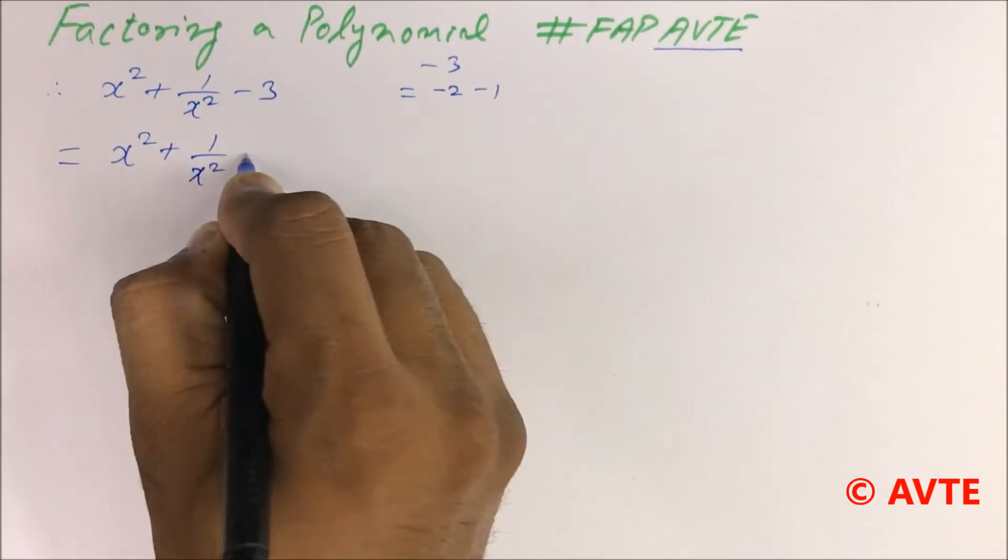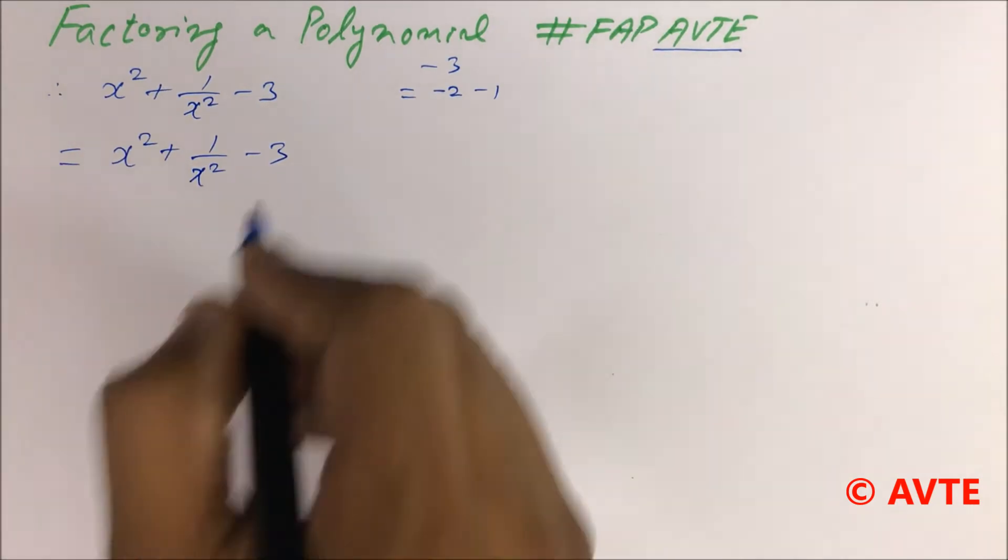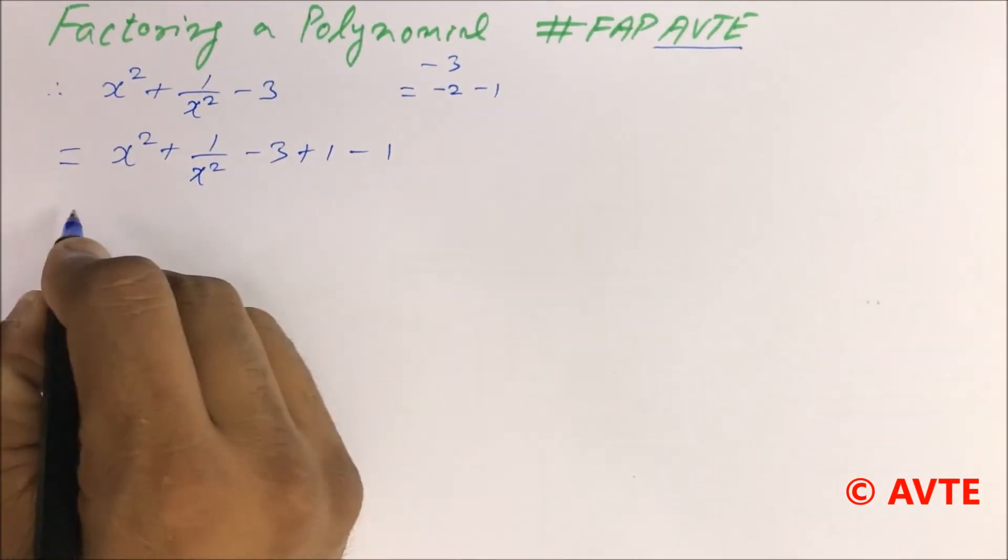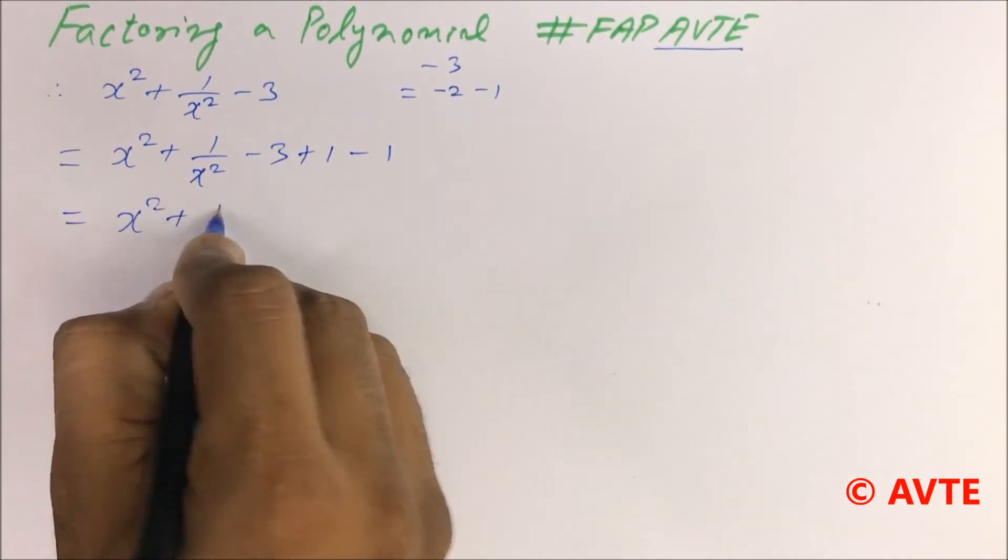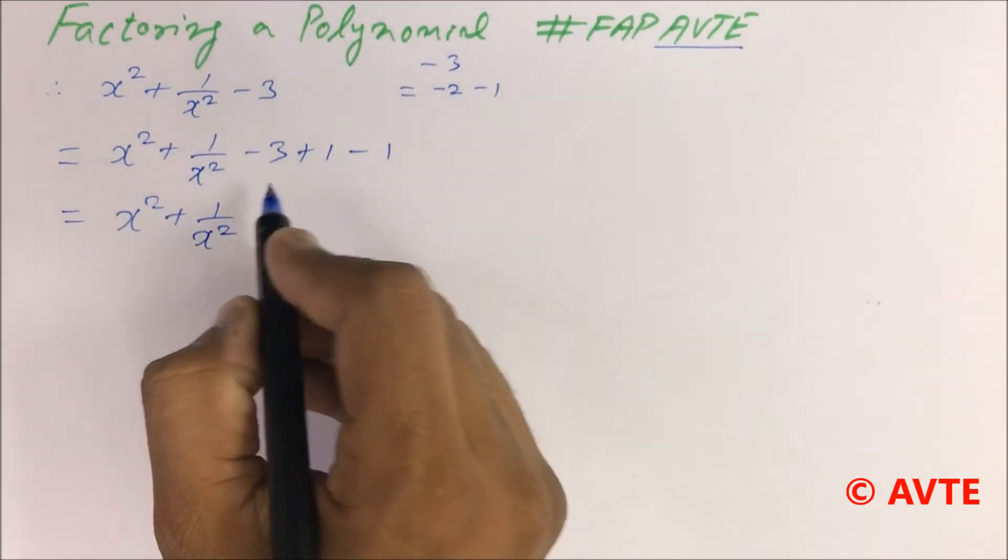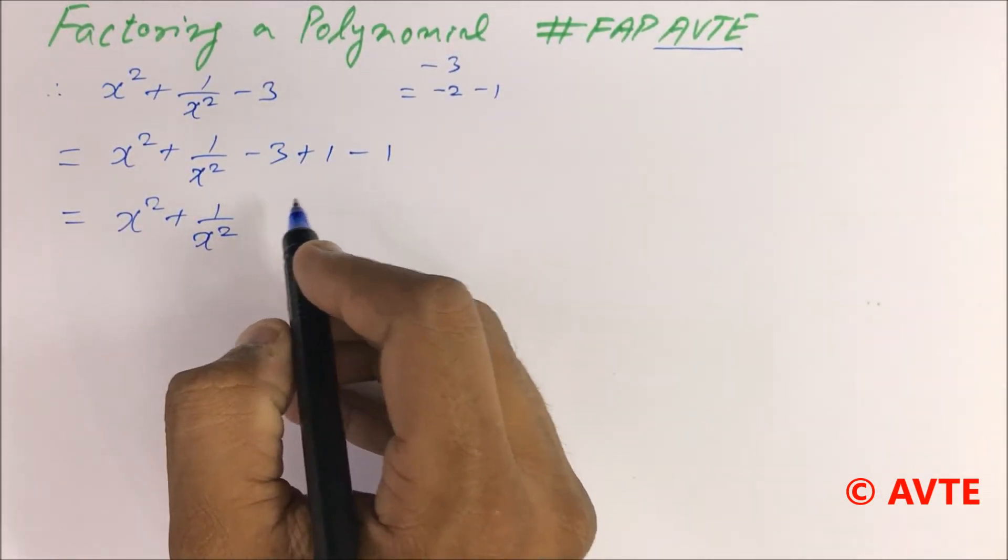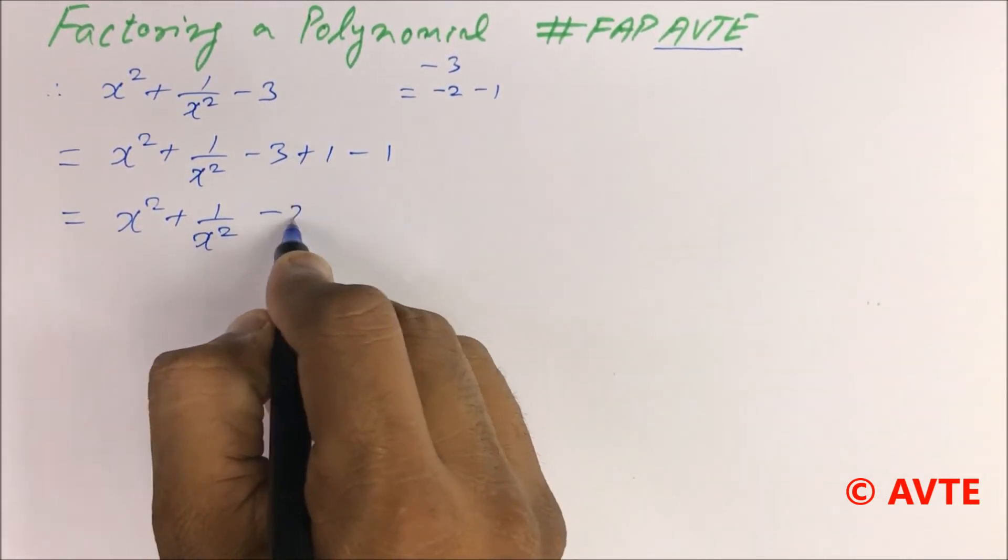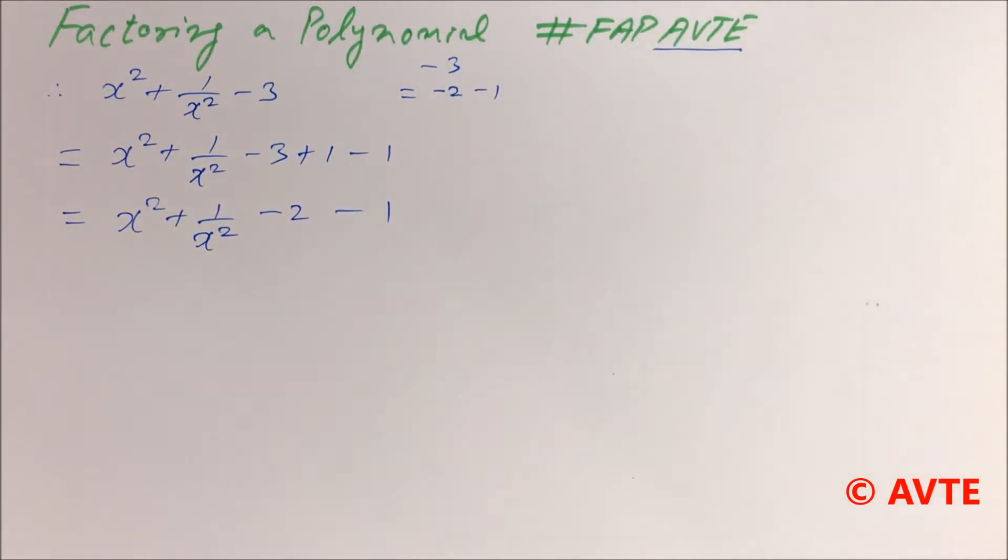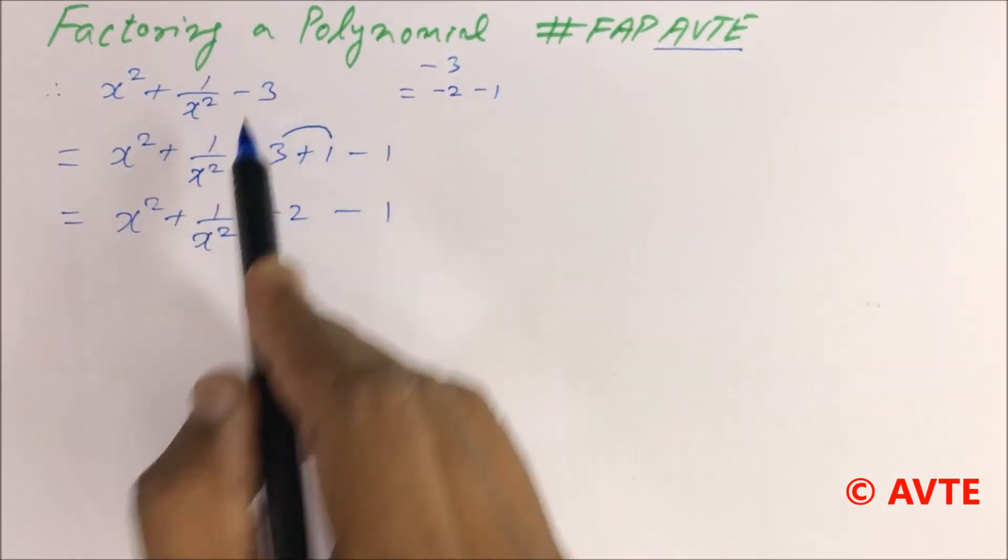You can add plus 1 and subtract minus 1. That is x square plus 1 by x square, this is minus 2 minus 1. Or you can directly do minus 3 as minus 2 minus 1.